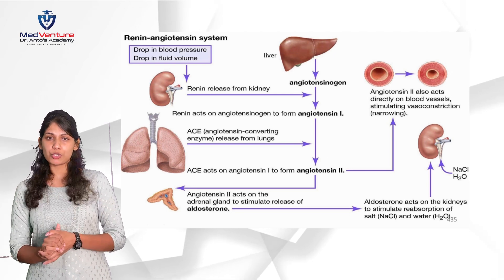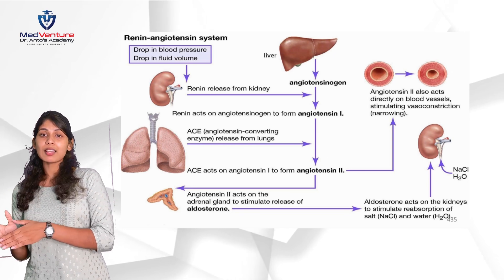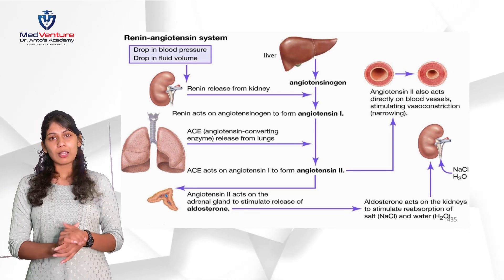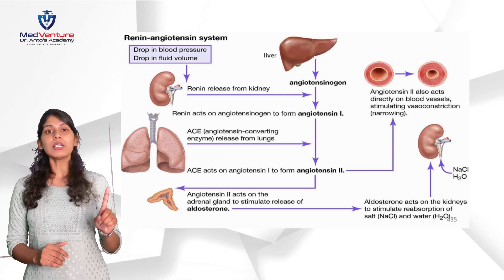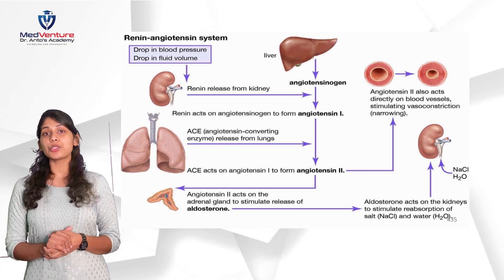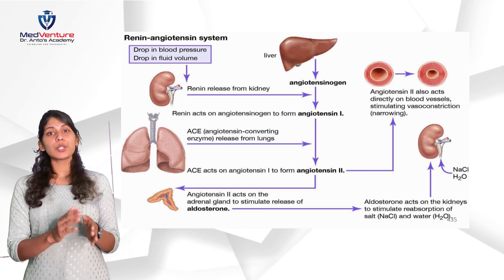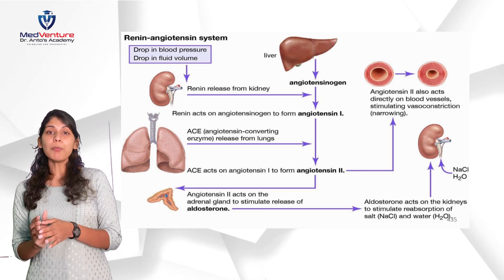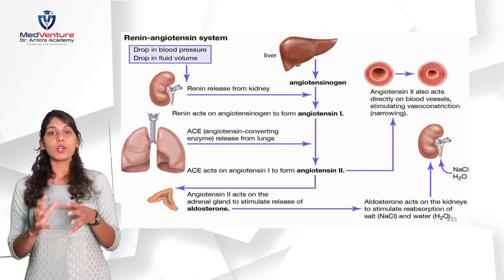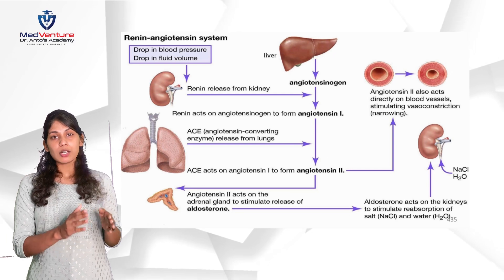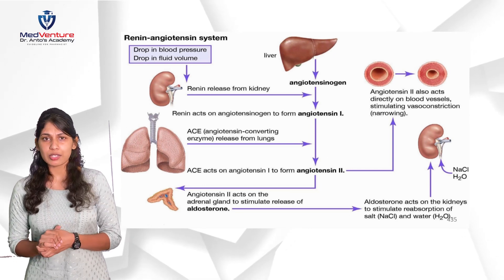Angiotensinogen, in the presence of renin, is converted to angiotensin 1, and that is converted to angiotensin 2. Remember: the first hormone is renin from the kidneys; with the help of renin, angiotensinogen is converted to angiotensin 1; and with the help of ACE — angiotensin-converting enzyme from the lungs — angiotensin 1 is converted to angiotensin 2.